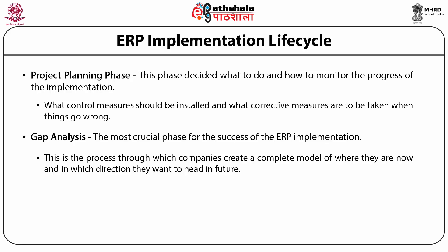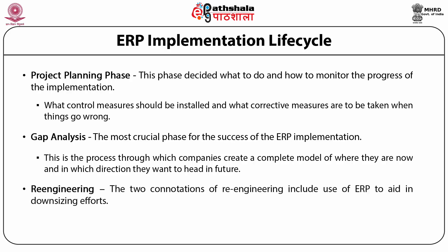Thereafter, we talk about re-engineering. If any re-engineering is required in the process, the two connotations include the use of ERP to aid in downsizing efforts. The second, or business process re-engineering approach to ERP implementation, implies that there are two separate but closely linked implementations involved: a technical implementation and a business process implementation. The ERP approach emphasizes the human element of necessary change within the organization.